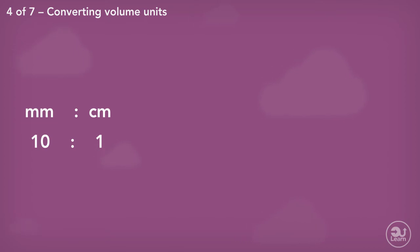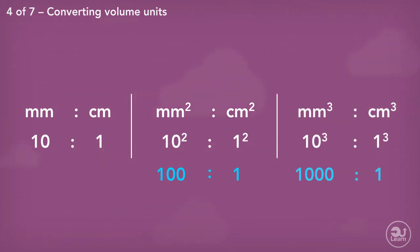10 millimeters is equal to 1 centimeter. 10² or 100 millimeters squared is equal to 1² or just 1 centimeter squared for area. So it's natural that we'll follow the same pattern for volume. 10³ or 1000 millimeters cubed is equal to 1³ or 1 centimeters cubed for volume. The ratio gets cubed for the relationship between the volumes.